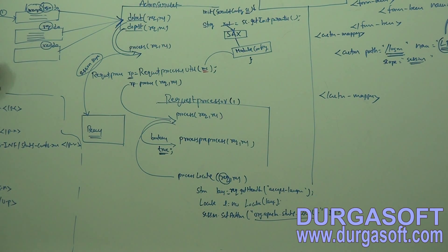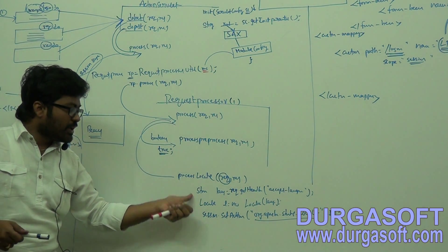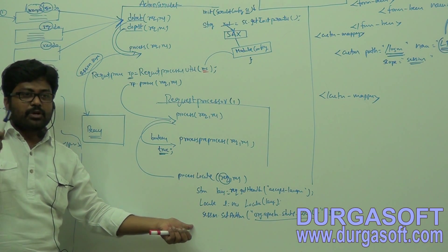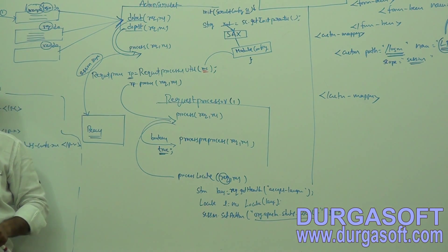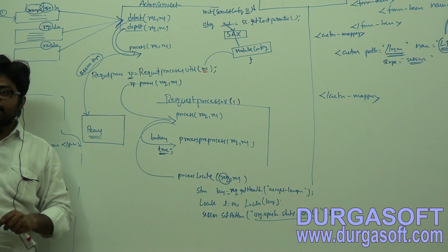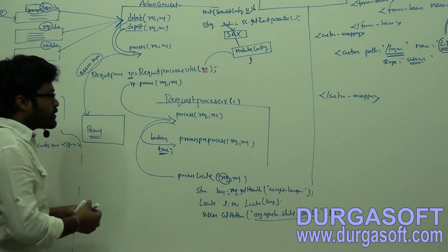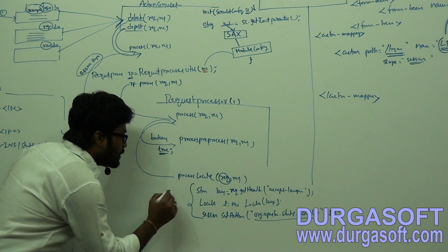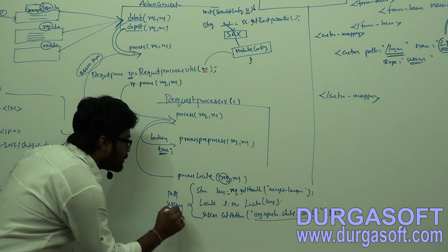How many times will this processLocale method execute? For a session, only one time it will execute. If you open a browser without closing it and submit any number of requests, this processLocale code will execute only one time per session. Per session means per browser open and close cycle - once you close the browser, one session completes.